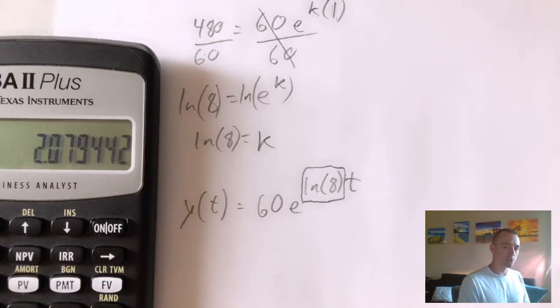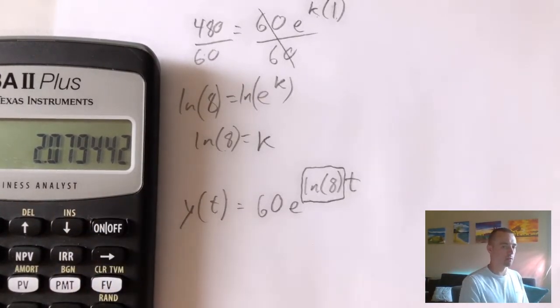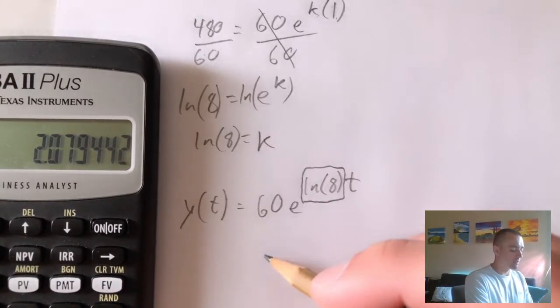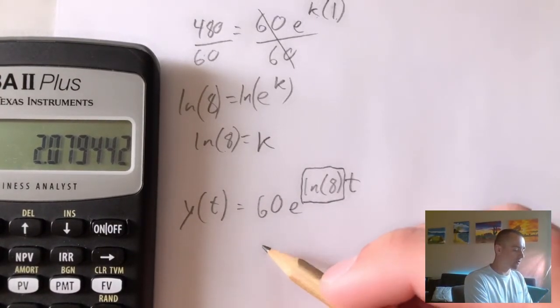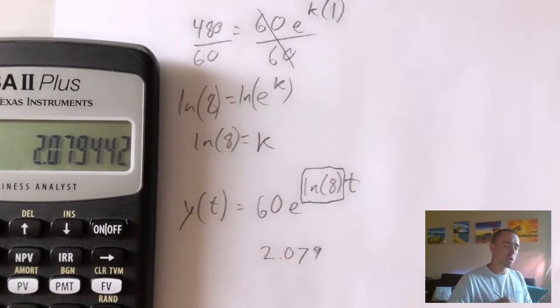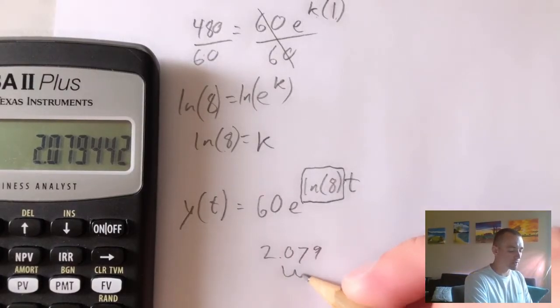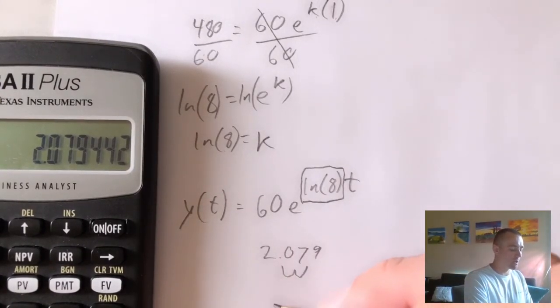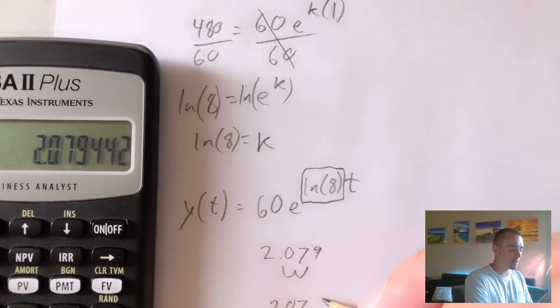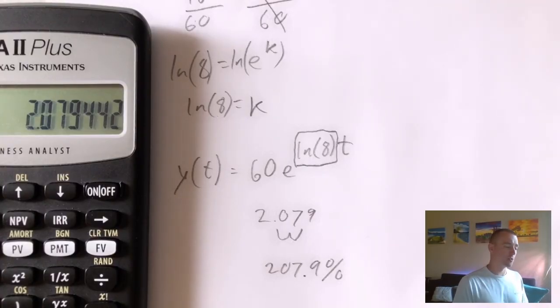And if you plug natural log of 8 into a calculator, you would just get this 2.079. And you could keep going further, but basically that tells us our relative growth rate would be 2.079. But if we wanted that as a percentage, we would just move the decimal over two places. So that would give us 207.9% would be our relative growth rate, or I should say 207.9% per hour. And that would be the solution to part A.